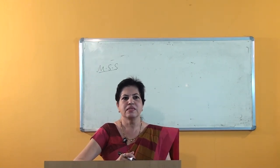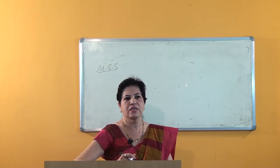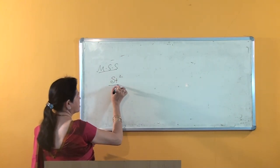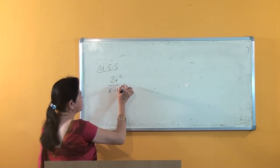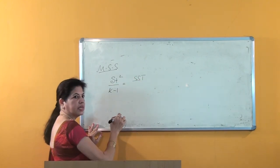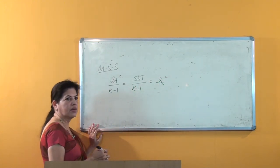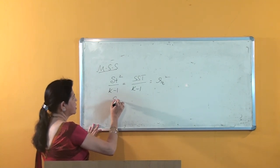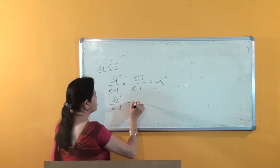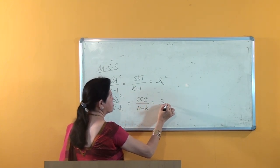Mean sum of squares: The sum of squares divided by its degrees of freedom gives the corresponding mean sum of squares. The mean sum of squares due to treatment is SS_Treatment divided by k minus 1, denoted as s_t squared. Similarly, the mean sum of squares due to error is SS_Error divided by n minus k, equal to s_e squared.